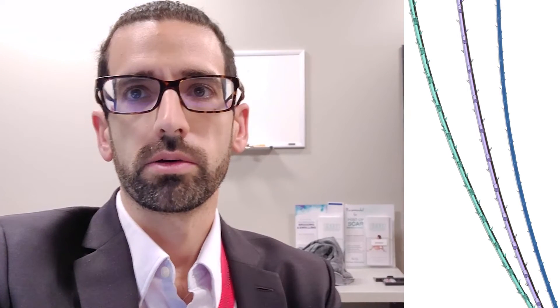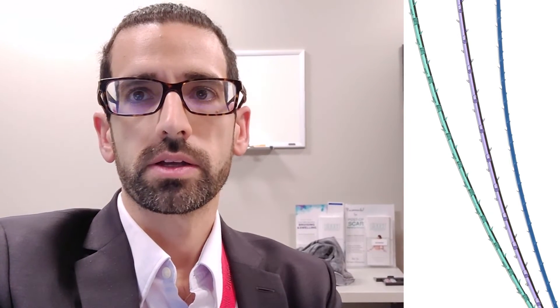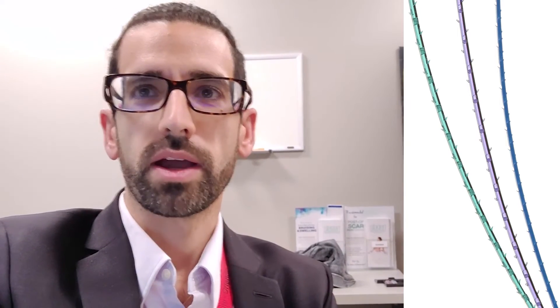Essentially on my abdominoplasties, I close the superficial fascial system with a barbed PDO suture and the subcuticular slash deep dermal with a 3-0 V-Lock and call it a day. It's made my procedures infinitely faster and saves me a lot of time, and I've not had any increased wound complications.